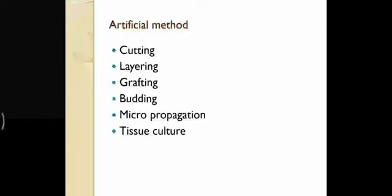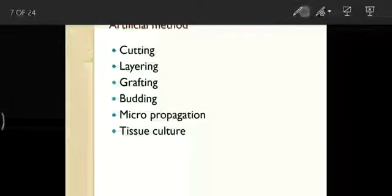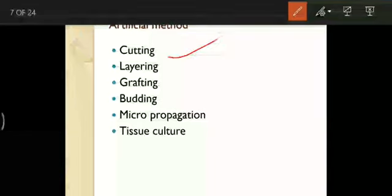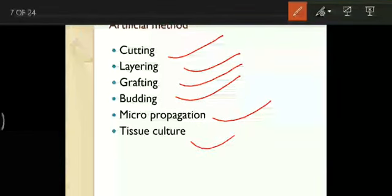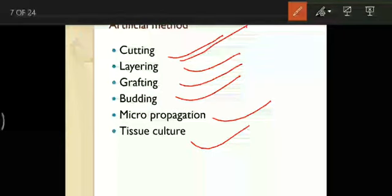The artificial methods used in laboratory or field practice include: cutting, layering, grafting, budding, micropropagation, and tissue culture. In cutting, as the name suggests, a part of the plant is cut and grown. In layering, a branch is bent into the soil without cutting it from the parent. In grafting, two different species with targeted characters are grafted together to combine desirable traits. Micropropagation is a scientific method, and tissue culture is also used.